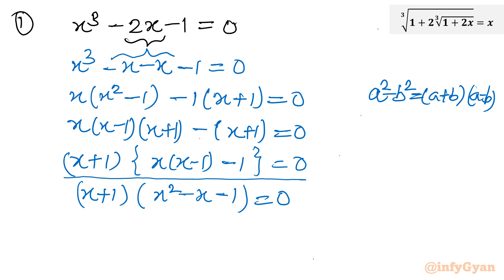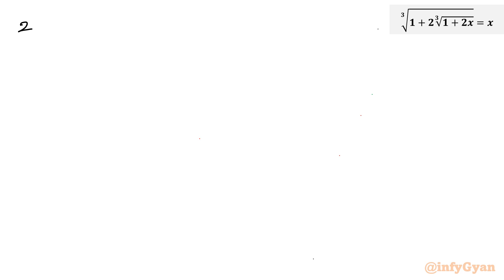So factorization is done and we will apply the quadratic formula to get the remaining solutions. Now let us solve the same equation using method number 2 — the synthetic division method, also known as the rational root theorem method. We start again with x cubed minus 2x minus 1 equal to 0.